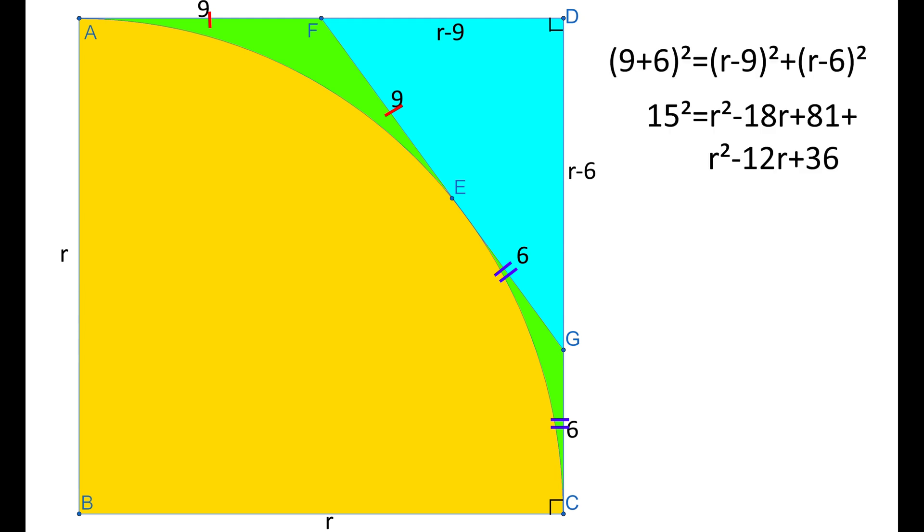Using the Pythagorean theorem and the quadratic formula, we can work out the radius is 18 units, as it cannot be negative.